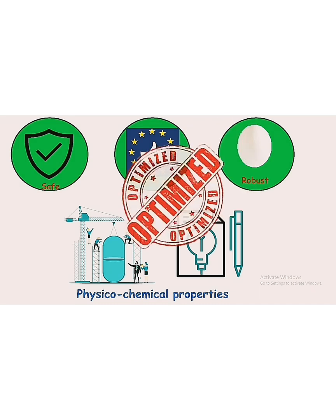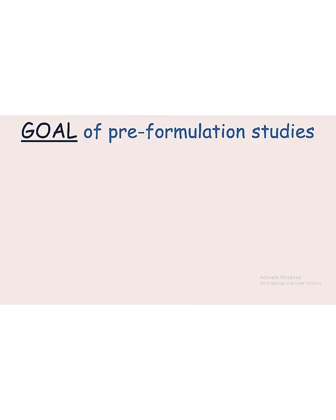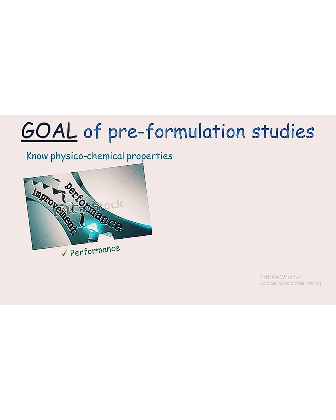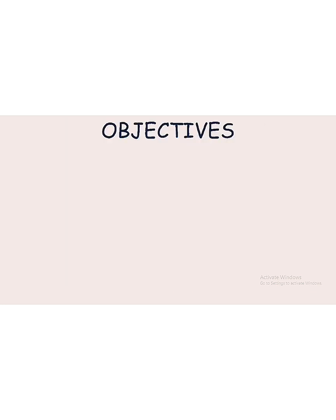Important physicochemical properties of the new drug entity need to be determined early in the discovery process to select an optimized molecule for formulation development. The ultimate goal of pre-formulation studies is to know the physicochemical properties of the new drug, to estimate its performance and development, and to avoid any significant barriers in the development process.